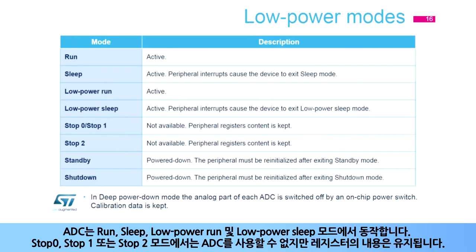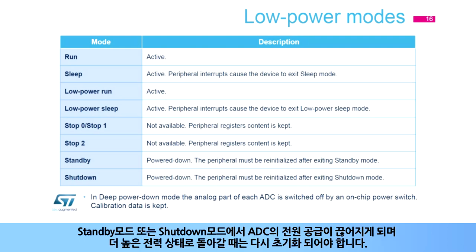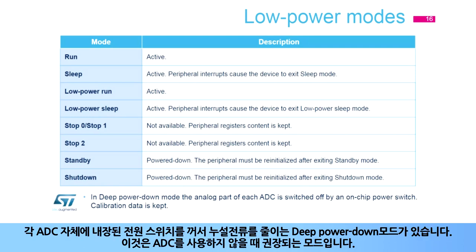The ADCs are active in run, sleep, low-power run, and low-power sleep modes. In stop zero, stop one, or stop two mode, the ADCs are not available, but the contents of their registers are kept. In standby or shutdown mode, the ADCs are powered down and must be reinitialized when returning to a higher power state. There is a deep power-down mode in each ADC itself, which reduces leakage by turning off an on-chip power switch. This is the recommended mode whenever an ADC is not used.